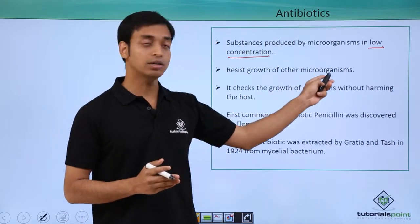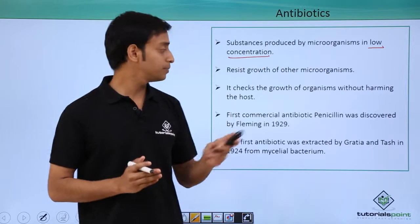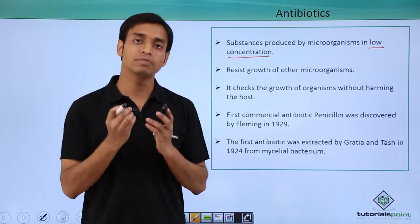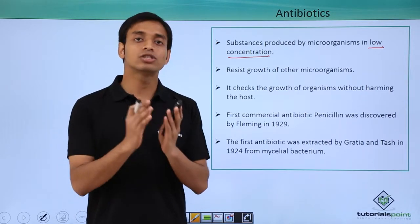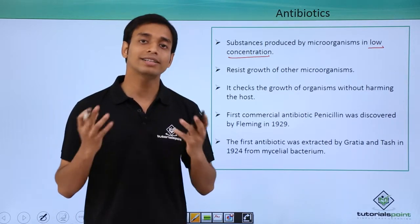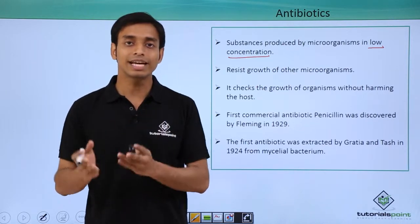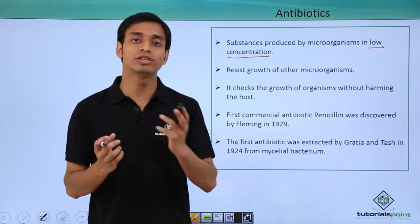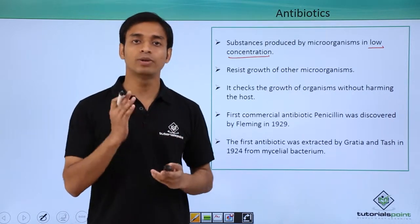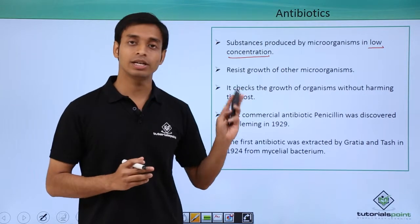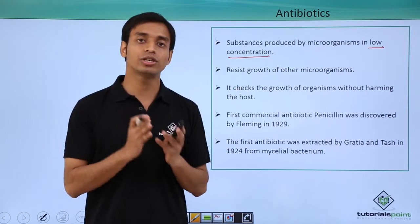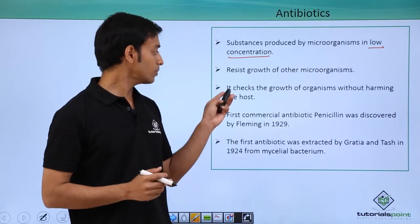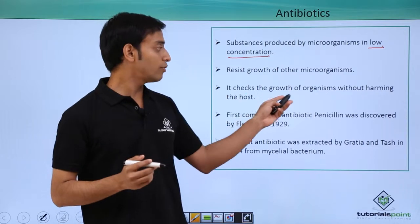The function of antibiotics is that they resist the growth of other microorganisms. Suppose one type of bacteria is growing in a particular environmental media — around it, it does not allow the growth of other types of microorganisms, because if other types of microorganisms grow then it has to share nutrients with them. To prevent this, these bacteria produce antibiotics which resist the growth of other types of microorganisms.